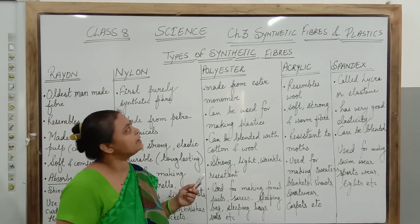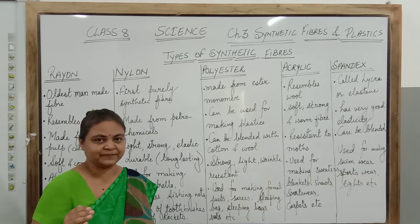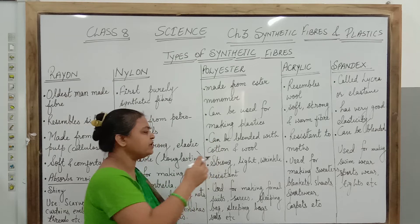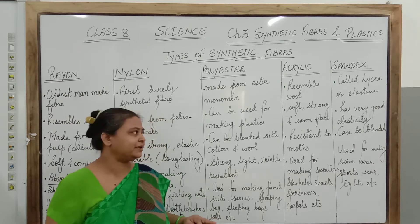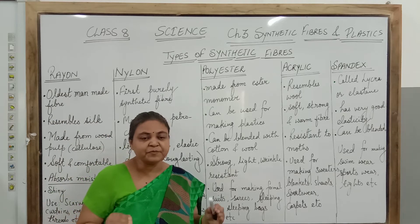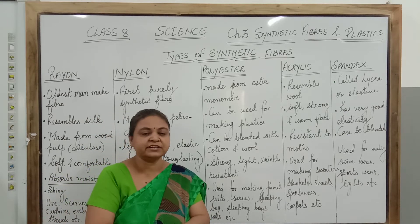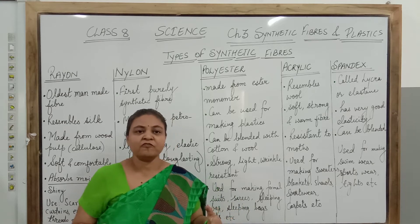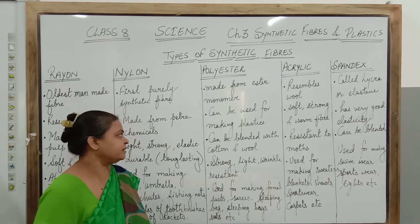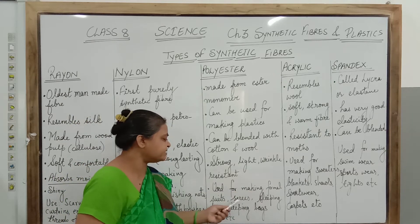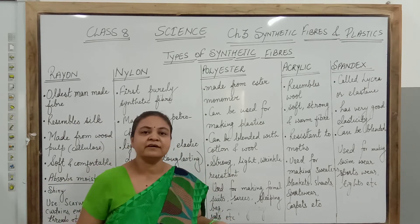The third synthetic fiber is polyester. See the name — polyester — that means it is made from the monomer ester. Polyester, like other synthetic fibers, is lightweight, strong, and wrinkle resistant. It also does not require much ironing. One more important property is that it can be mixed with cotton to make poly cotton, or mixed with wool to make poly wool. A certain percentage of polyester and wool are mixed together to make formal suits. Main uses are for making formal suits, sarees, sleeping bags, and sails for board sails.